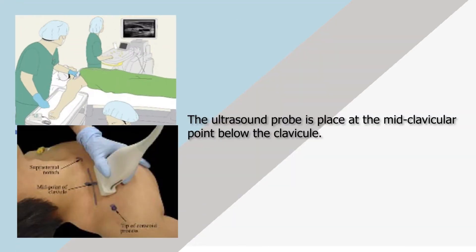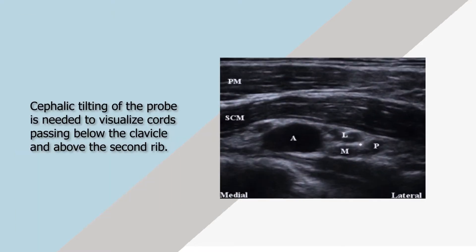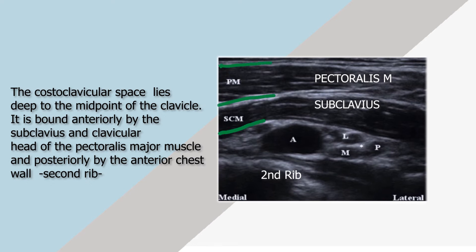The ultrasound probe is placed at the mid-clavicular point below the clavicle. Cephalic tilting of the probe is needed to visualize the cords passing below the clavicle and above the second rib. The costoclavicular space lies deep to the midpoint of the clavicle.